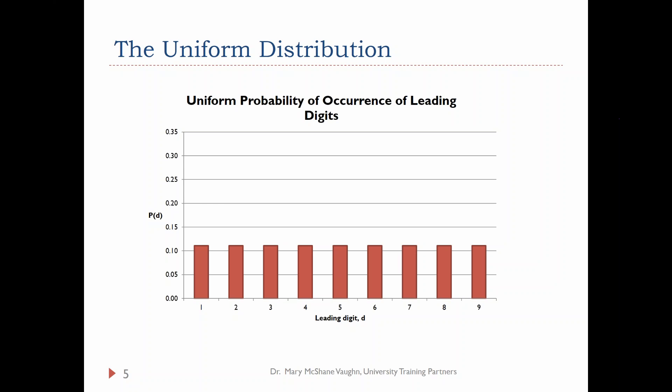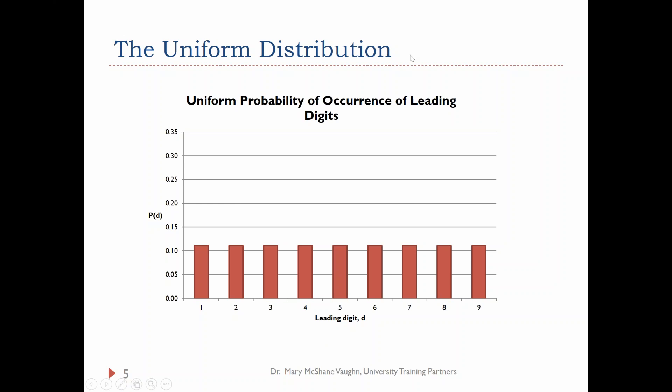The cheater would think they could just slip that data in there and nobody would know. Well, luckily, this is really not the case. A lot of data doesn't follow a uniform distribution.